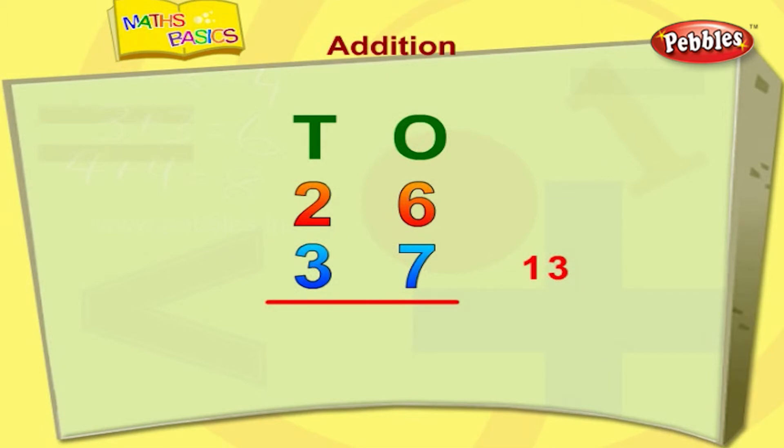We have to write the ones digit down and carry the tenths digit to the tenths column. Now, we have 1 plus 2 plus 3 is equal to 6. It's so simple.